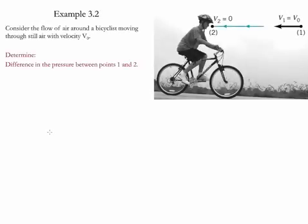Example 3.2. In this example we consider the flow around a bicyclist moving through air with velocity v0. We need to determine the difference in pressures between point one and point two.